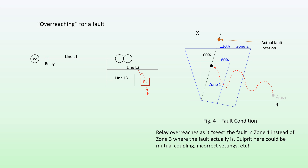So every under-reaching or overreaching operation of the relay does not necessarily lead to an incorrect relay operation from a system point of view. Similarly, if a fault was in Zone 3 but the relay saw it a bit closer — say within the Zone 3 characteristic — then technically the relay has overreached for the fault, but from a system point of view it would have operated correctly.